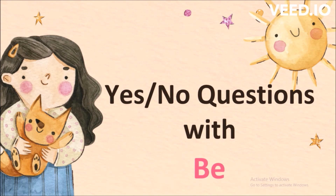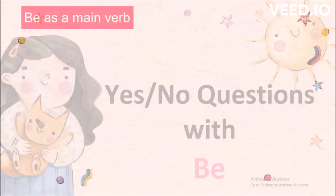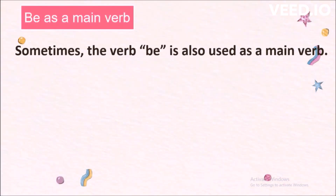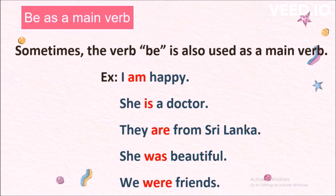Let's discuss how to form yes/no questions with be. I will discuss this in two parts. First, we will see how we can form yes/no questions when be plays the role of the main verb. Examples: I am happy. She is a doctor. They are from Sri Lanka. She was beautiful. We were friends.